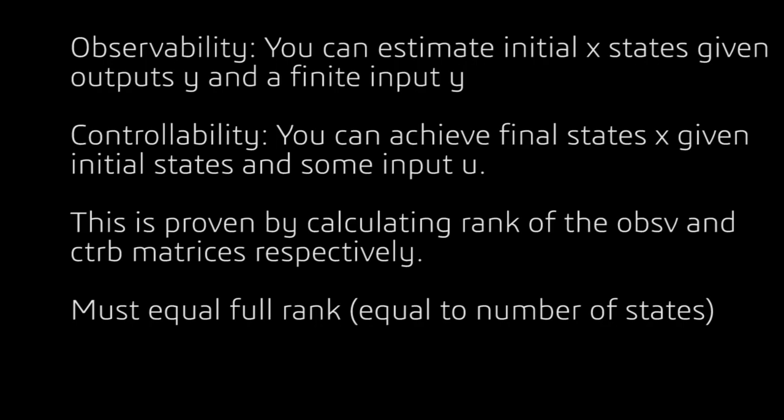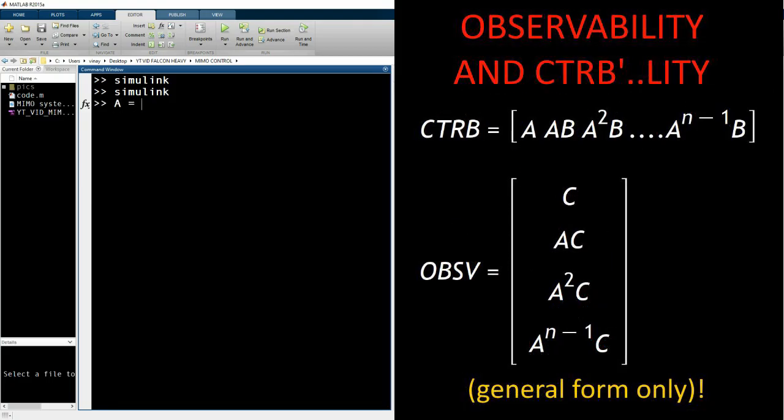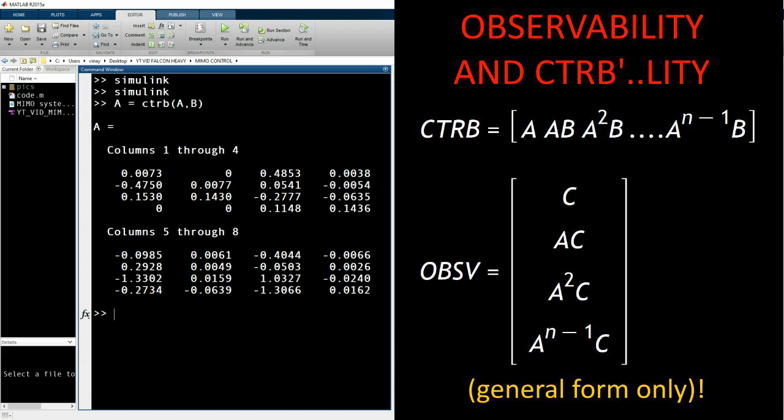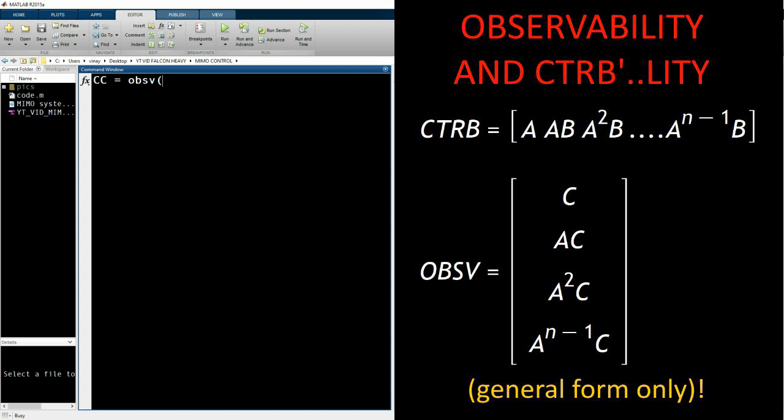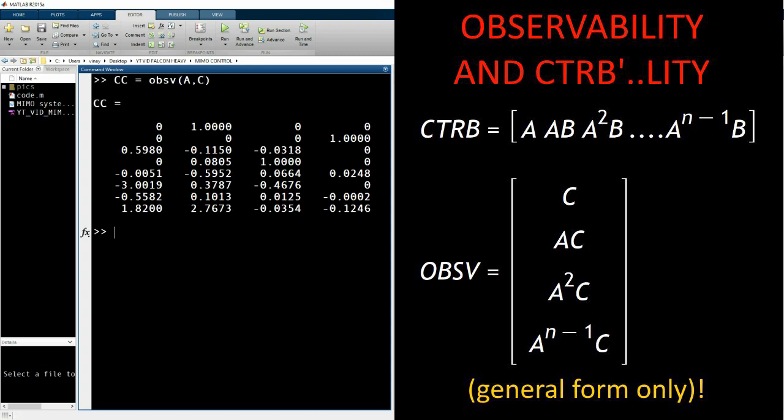You do that by going into MATLAB and typing in ctrb(A,B) and checking the rank. It should be equal to n, which is 4 in this case. Similarly for observability, we can type in obsv(A,C) and check the rank. It's 4, so that means our system is observable. This is very important if we're designing an estimator.